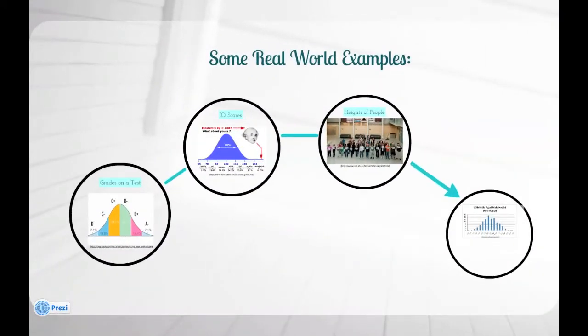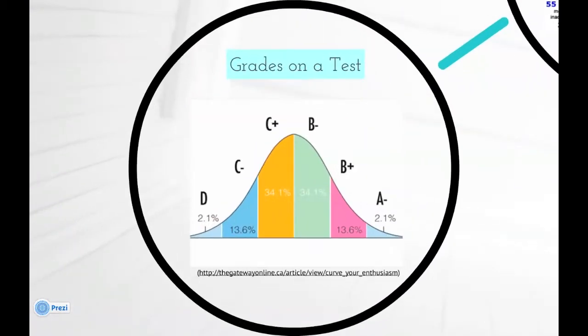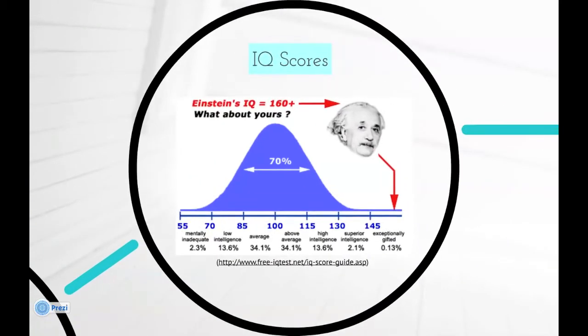Some real-world examples: grades on a test, where C is the average middle value; IQ scores, where 100 is the average middle value.